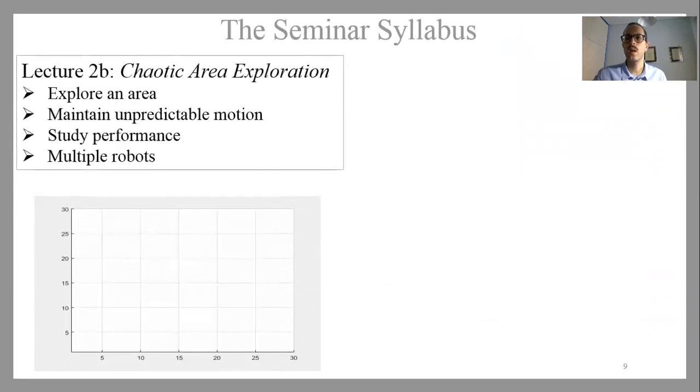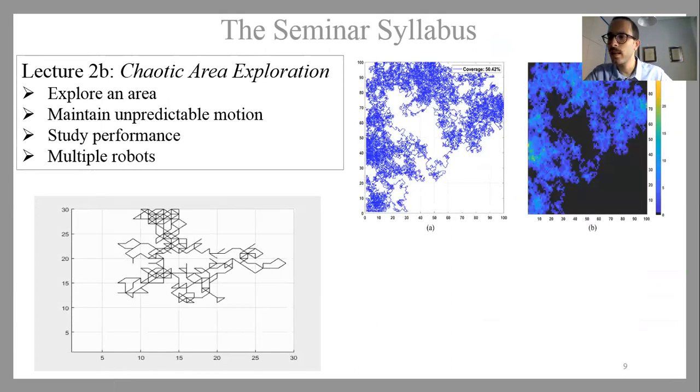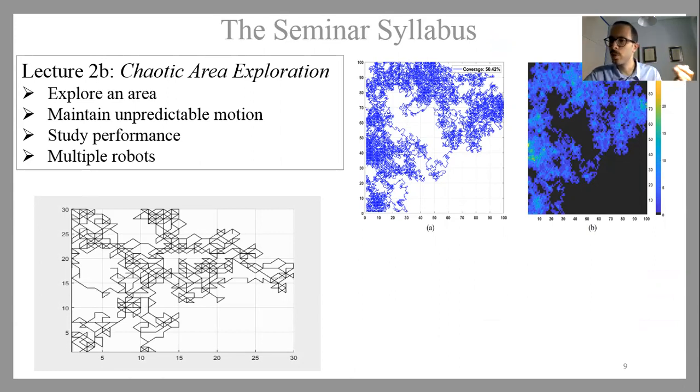And then we moved on to the applications. In the second lecture, we discussed an application relevant to security, which is chaotic area exploration. This is an application that is used mainly for security, but applications like exploration and firefighting for example. So we discussed various topics of research like the study of the performance of chaotic exploration, the use of multiple robots, and trending topics like the actual physical implementation.